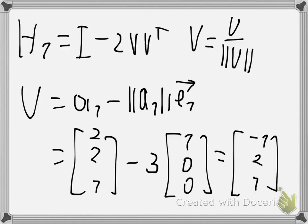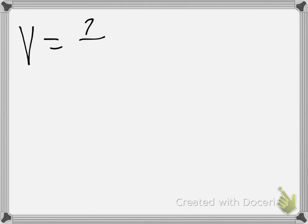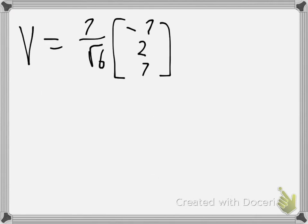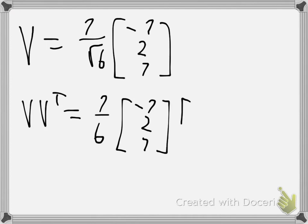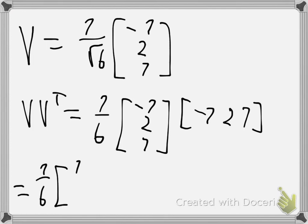And so v will be u divided by its length. The length will be the square root of (-1)^2 + 2^2 + 1^2 + 1^2, wait — the square root of 6. So v equals 1 over sqrt(6) times (-1, 2, 1). And so v times v transpose will be 1 over 6 times the outer product of (-1, 2, 1).